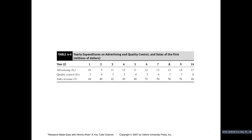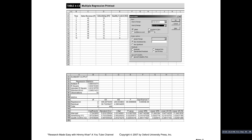If we run the regression of sales revenue on advertising expenditure and quality control, the Excel output is given below. In the table, row number 17 is the intercept, row number 18 is advertising expenditure, and row number 19 is quality control. The coefficient of advertising expenditure is 1.87, its t-value is 2.66, and its p-value is 0.032, which shows that the coefficient is significant at the 5% level. Its positive sign means that if advertising expenditure increases by 1 million dollars then sales revenue will increase by 1.87 million dollars.